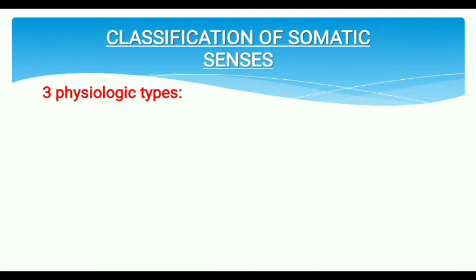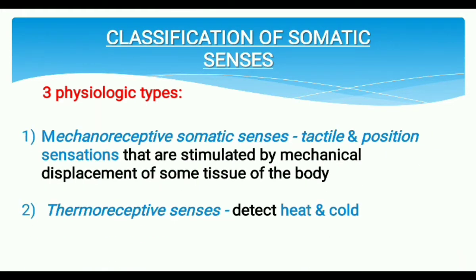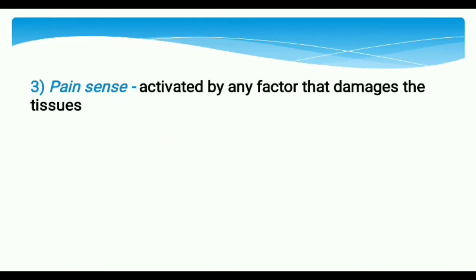The three types are: mechanoreceptive somatic senses, thermoreceptive senses, and the pain sense. Mechanoreceptive somatic senses include both tactile and position sensations, stimulated by mechanical displacement. Thermoreceptive senses detect heat and cold. The pain sense is activated by any factor that damages the tissues.